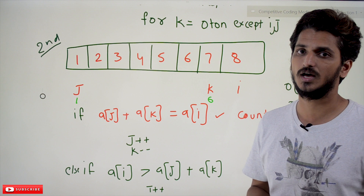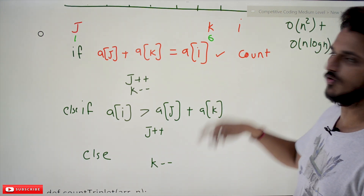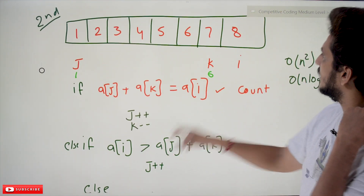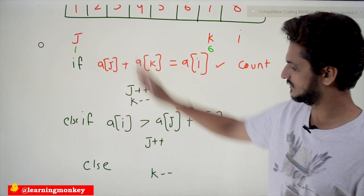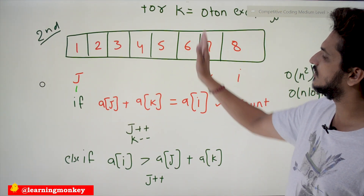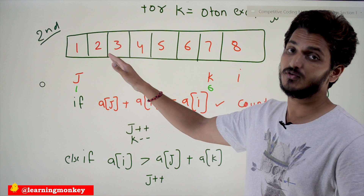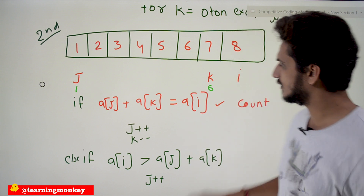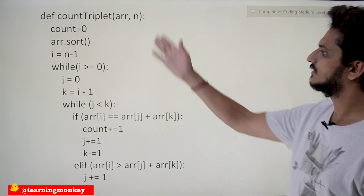There are only three conditions: if a[j] + a[k] == a[i], increment count, then j++ and k--. Else if a[j] + a[k] > a[i], do j++ to increase the smallest element. Else, do k-- to decrease the largest. Repeat this for each i from the largest element down. Each iteration checks n times and repeats n times, giving O(n²). The code is provided on our website.